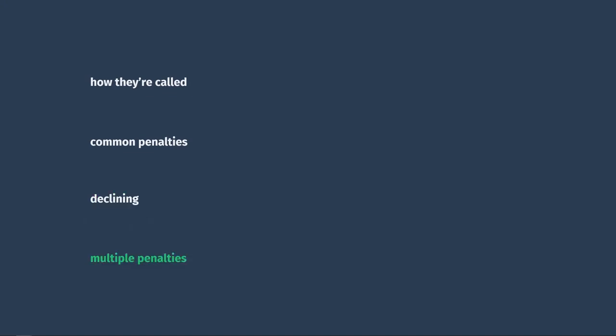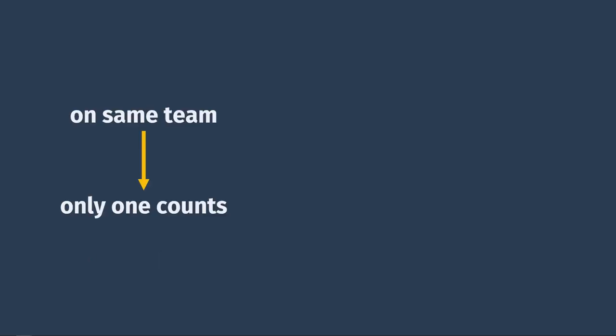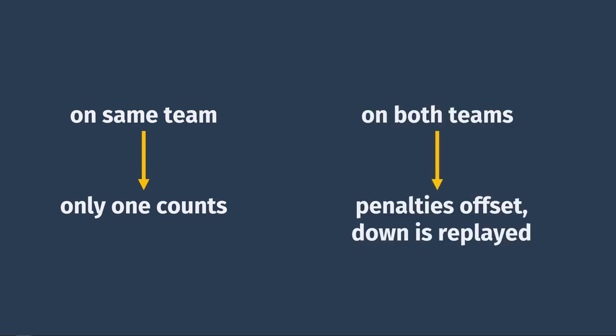What happens if there are multiple penalties on the same play? If both penalties are on the same team, generally only the one that benefits the other team the most is applied — they are not added together. So if the defense committed both holding and pass interference, whichever penalty moves the offense further up the field will count. If there are penalties on both teams, in almost all cases the penalties will offset, meaning they cancel each other out, and there's a do-over from the previous down spot. As always, the referee will explain everything so everyone gets back on the same page.